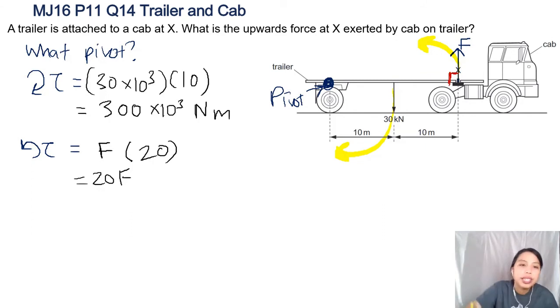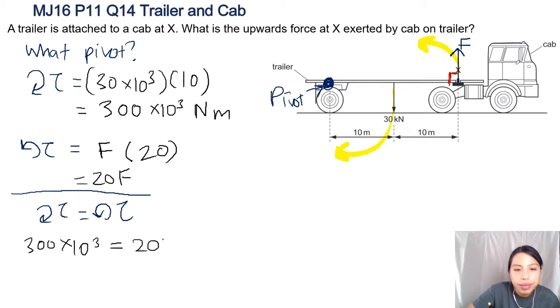And you equate both equations together. Let's draw a line - oh that's a very bad line. So once clockwise, we have 300 times 10 to the 3 equals 20F. It's kind of like the equilibrium problem already, but never mind - give you a head start. So then your force at the end will be 300 times 3 divided by 20, so you get about 15 kilonewtons.